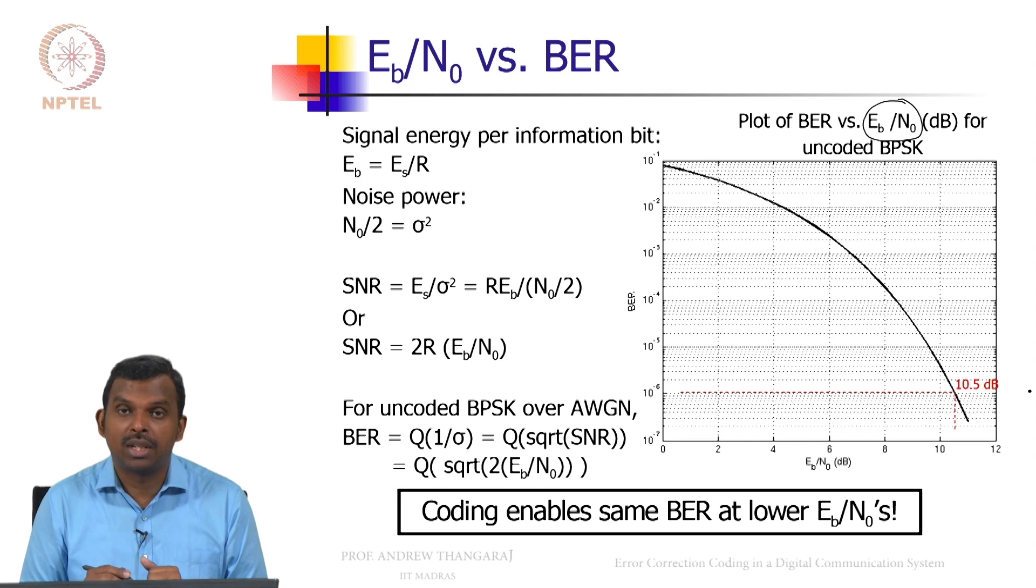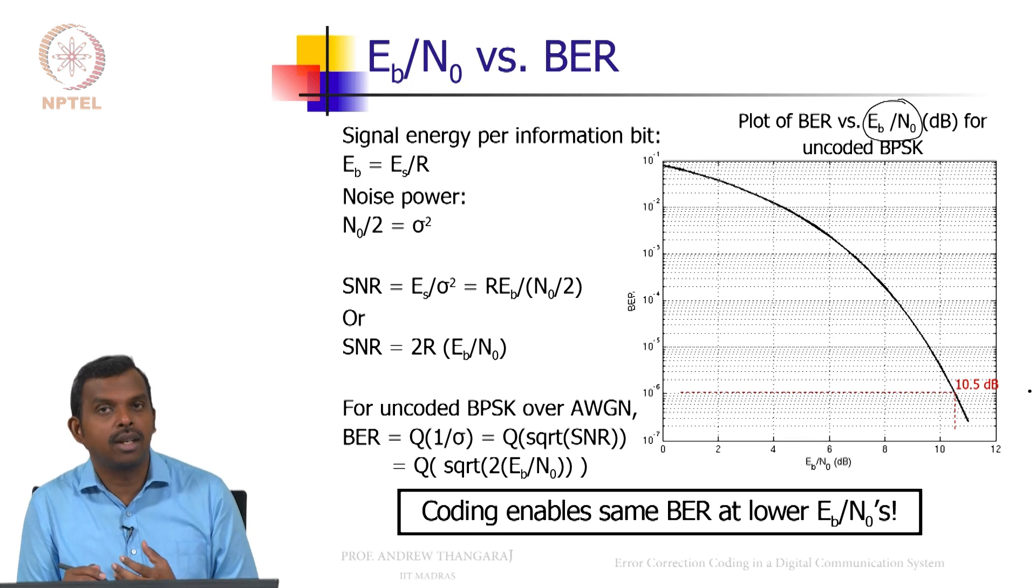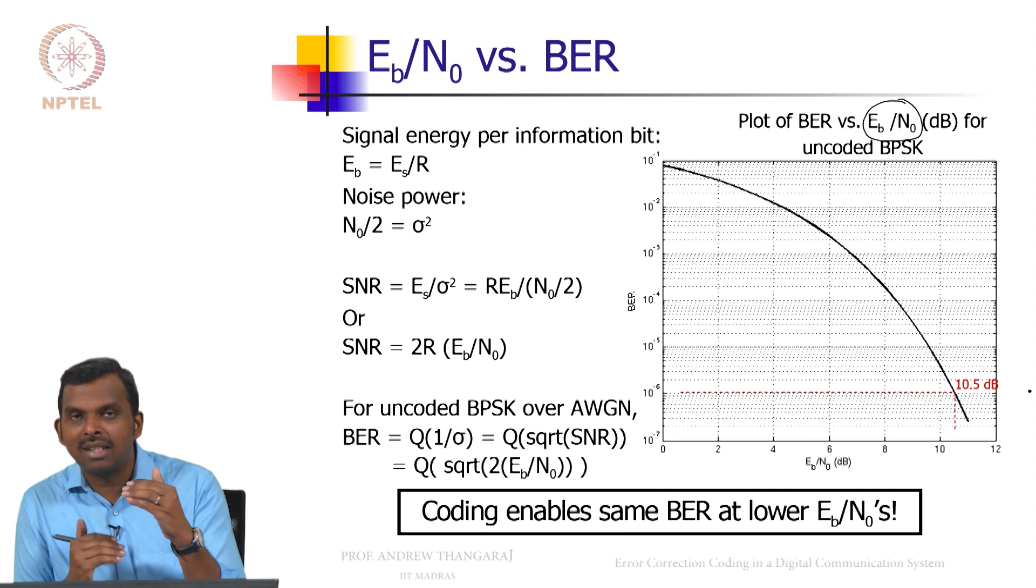If you remember from the previous picture, the uncoded case had a rate of 1. Every symbol carried one bit of information. Now once you do coding, every symbol is not carrying one bit of information. It is carrying less than one bit of information. So uncoded and coded, the comparison is not fair.